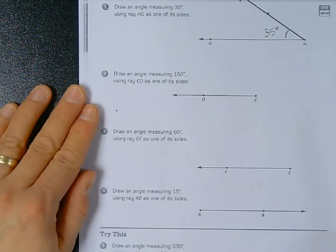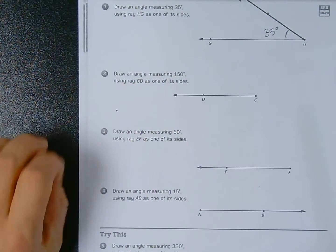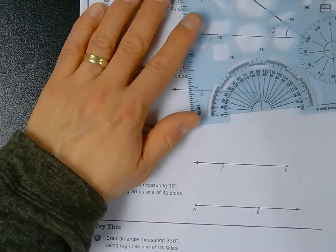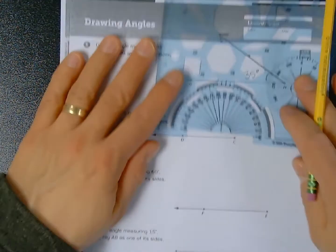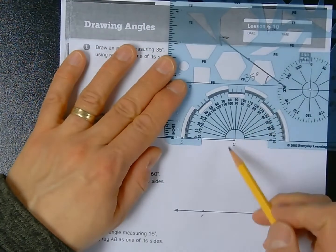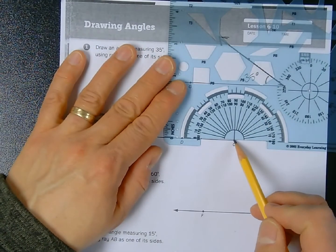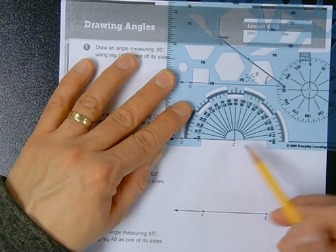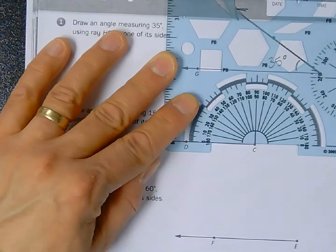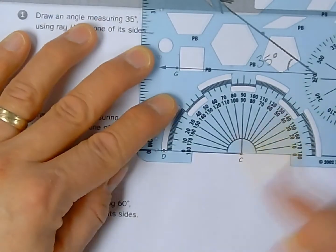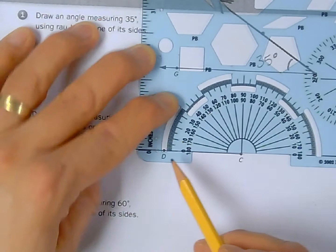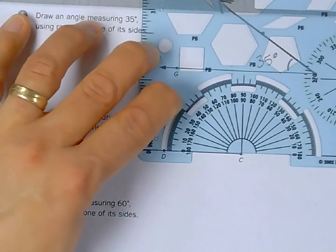Let's try another one. Number two says draw an angle measuring 150 degrees using ray CD as one of its sides. I'm going to approach it the same way, so I'm going to lay down my protractor right here. I'm going to line up the endpoint, which will become the vertex, with my center point of my template for my semicircle protractor, and then I have my line lined up here with the ray CD.